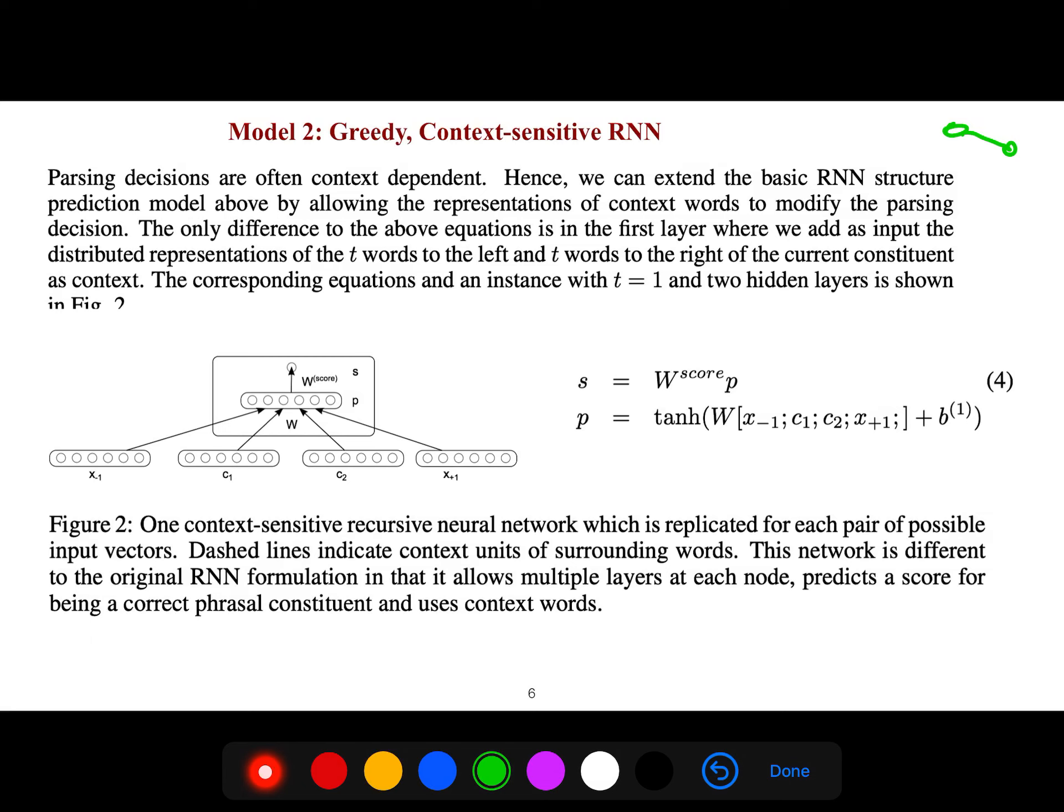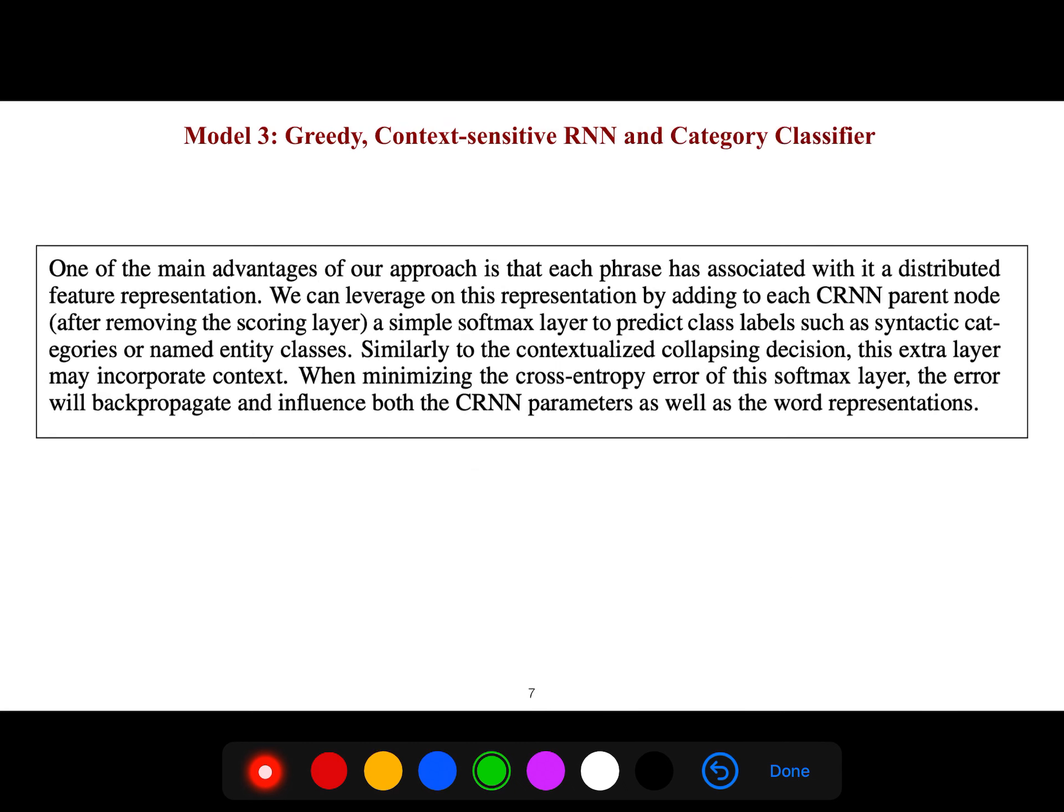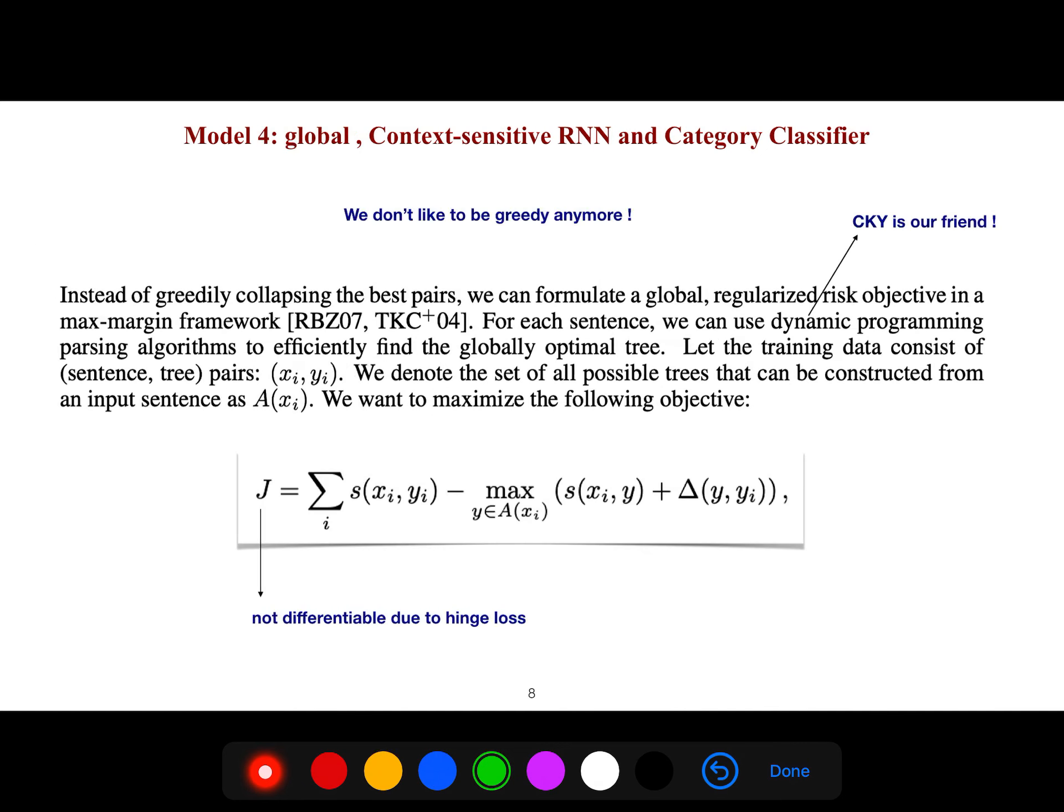So in the second model, he adds context-sensitive. It means that we also include the surroundings of that, your surrounding voice of that, so that it has better expressive power. So you get the score as usual. And the third model, he also introduced category classifier, because that is another source of expressiveness, and it reduces the loss even more significantly.